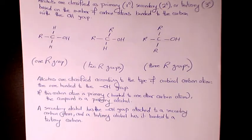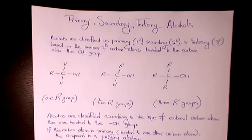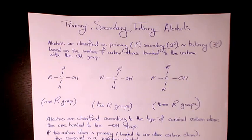So if the hydroxyl group connects to the primary carbon, it's a primary alcohol. If it connects to the secondary carbon, it's called a secondary alcohol. And if the hydroxyl group connects to the tertiary carbon, it's called a tertiary alcohol. Basically, these are the differences between the classification of different alcohols. I hope you enjoyed this video — please leave me a comment if you have any questions.